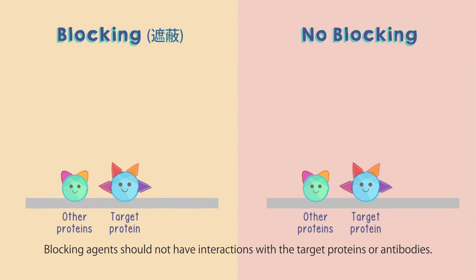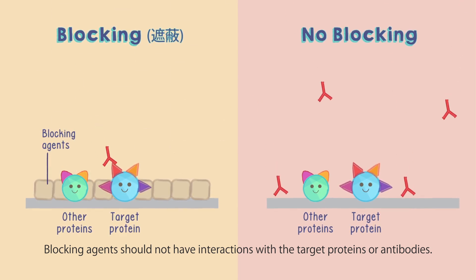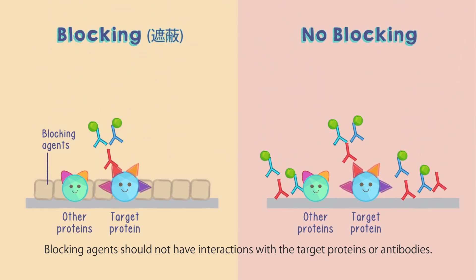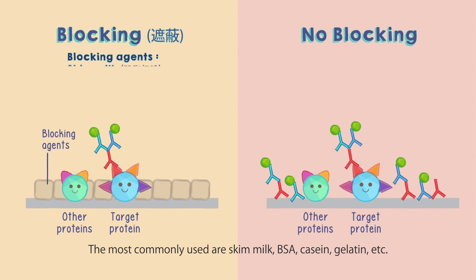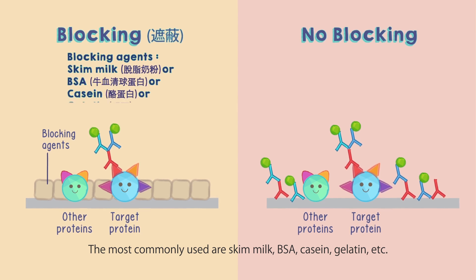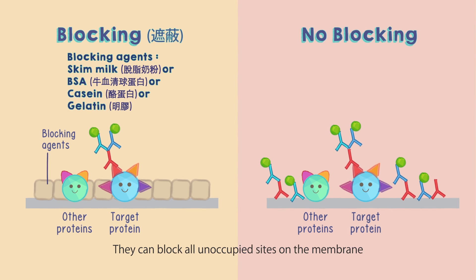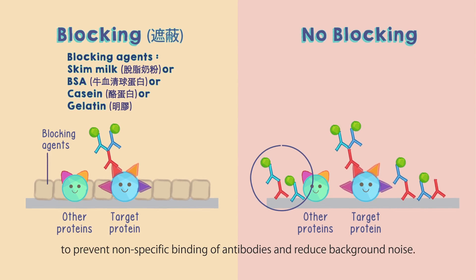Blocking agents should not have interactions with the target proteins or antibodies. The most commonly used are skim milk, BSA, casein, gelatin, etc. They can block all unoccupied sites on the membrane to prevent non-specific binding of antibodies and reduce background noise.